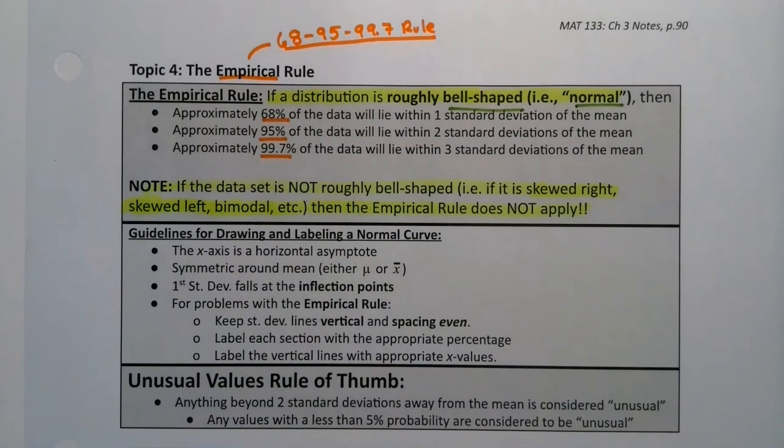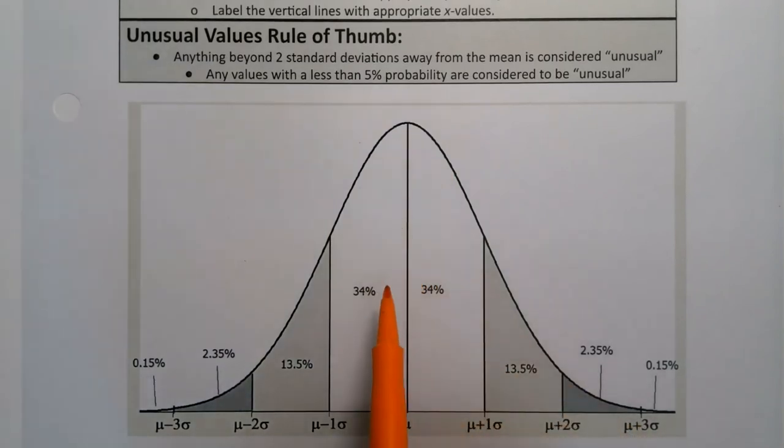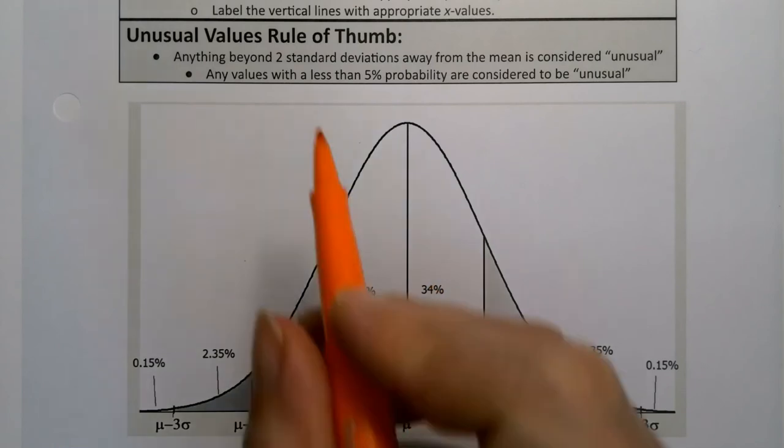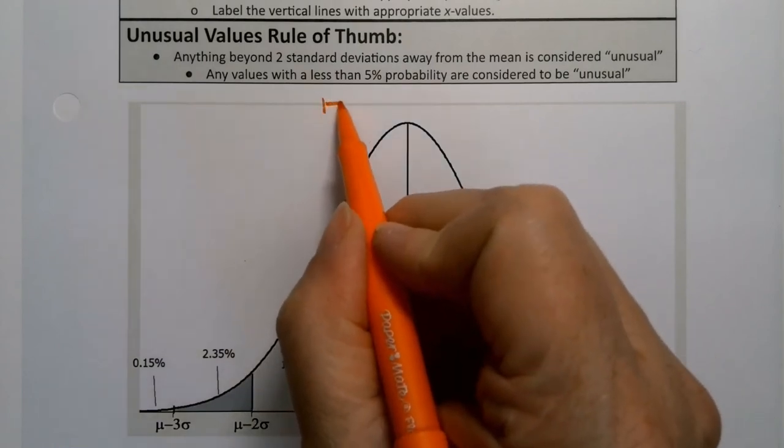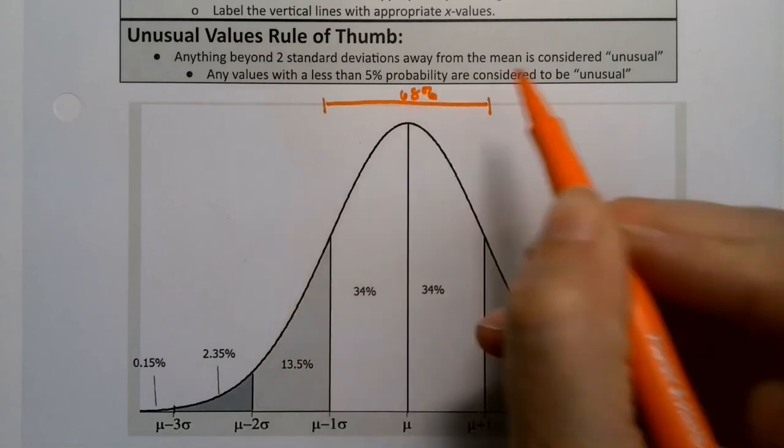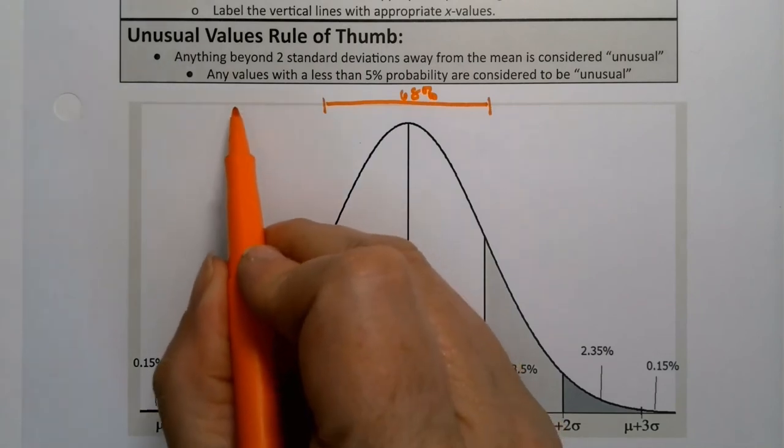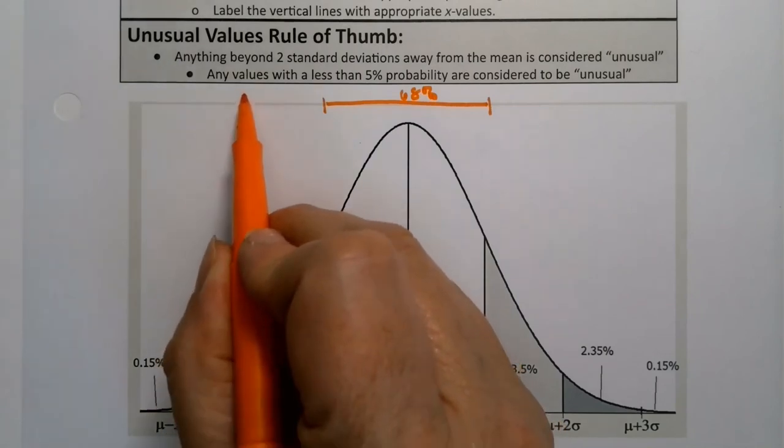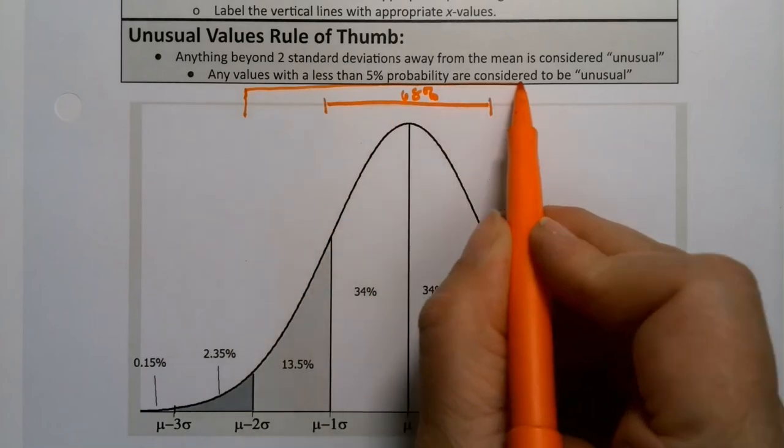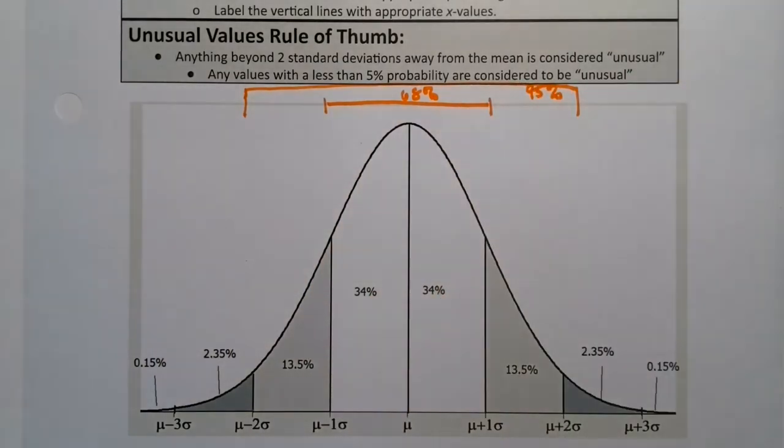Now these particular numbers, let's show you where they come from. So 68 comes from the graph is symmetric. 34 plus 34 makes 68. So from here to here you'll have 68%. And then from two standard deviations, 13.5 plus 34 plus 34 plus 13.5 makes 95. So from here all the way over to here would be 95%.